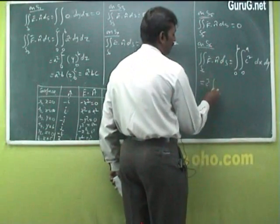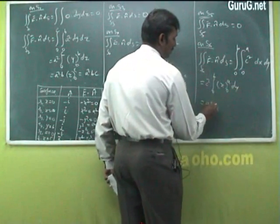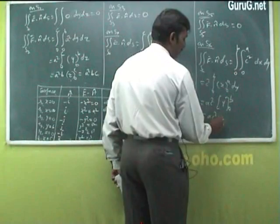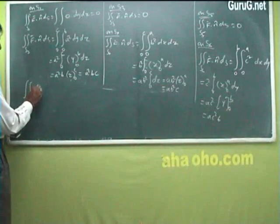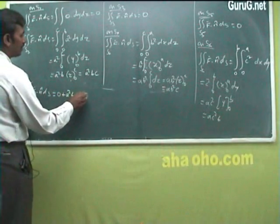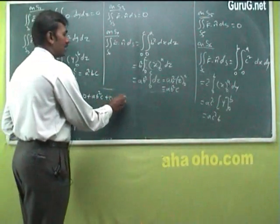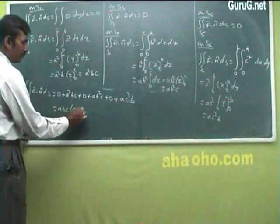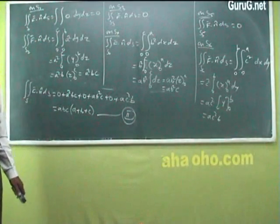On S6 (z = c): the integral gives ac²b. Therefore the total surface integral equals 0 + a²bc + 0 + ab²c + 0 + ac²b. Taking abc as common factor gives abc(a + b + c). From equations (1) and (2), both sides are equal, so the Gauss Divergence Theorem is verified.